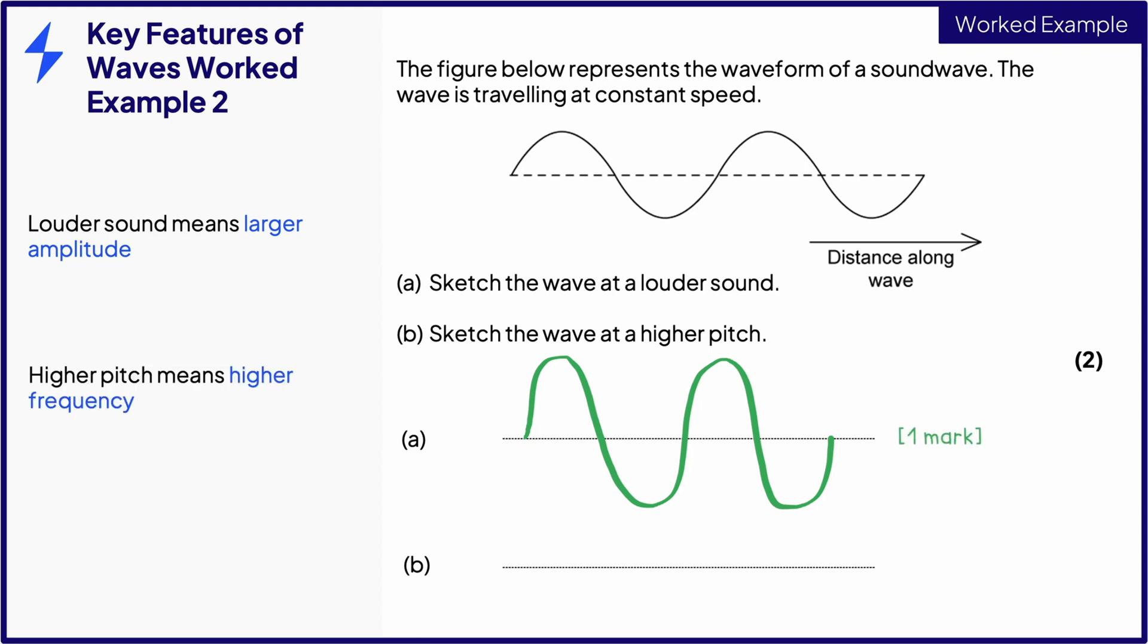For B, a higher pitch of sound is one at a higher frequency. This means the wavelength of the wave is reduced, so the waves are more squashed together, like this. Again, since this is the only change in the wave, it must be drawn with the same amplitude as the original for the second mark.